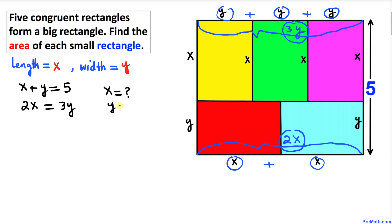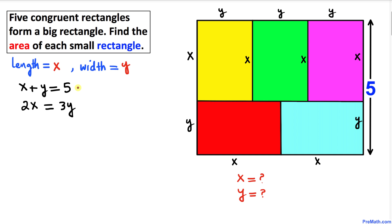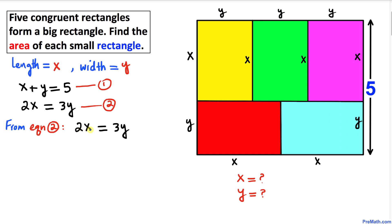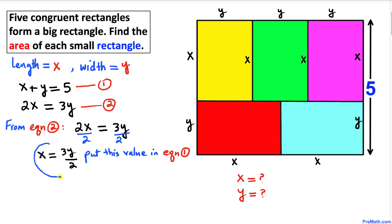Let me call the first equation equation number one and the second equation number two. Now let's focus on equation number two: 2x equals 3y. Let's solve for x by dividing both sides by two, so x equals 3y divided by two. We will now substitute this x value into equation one.